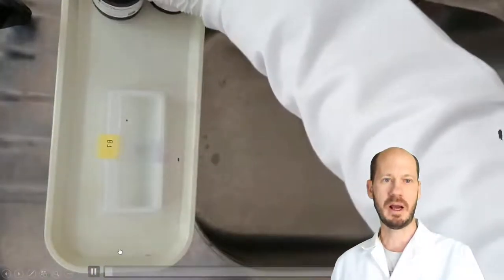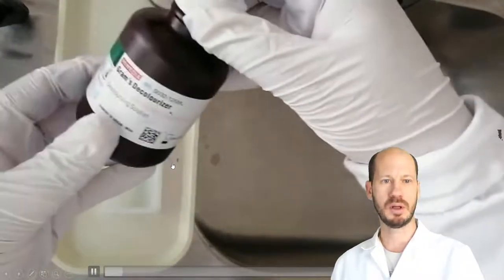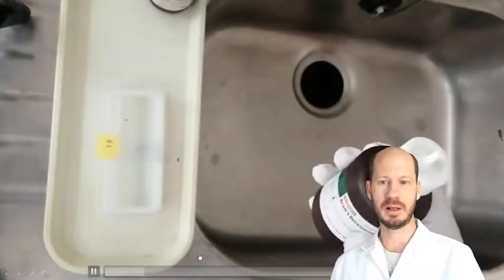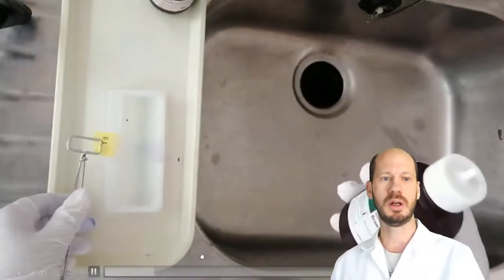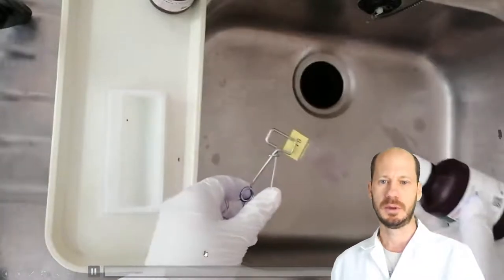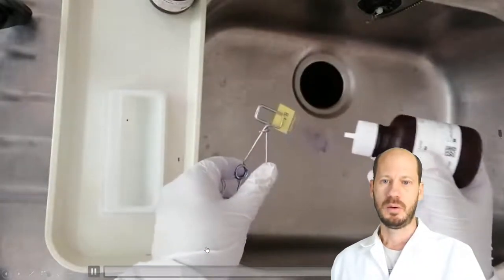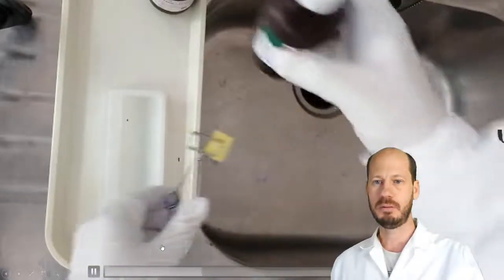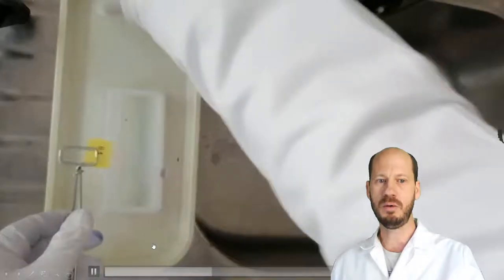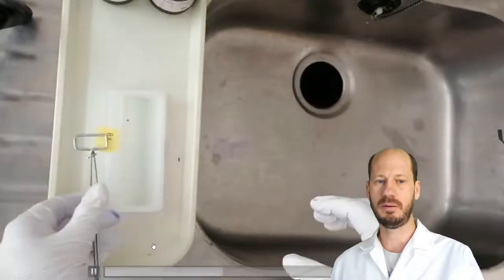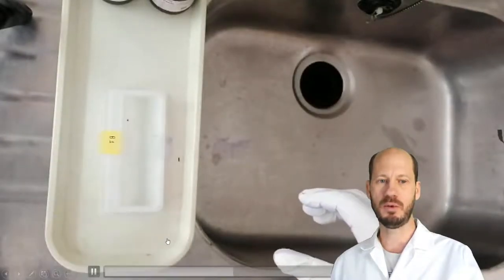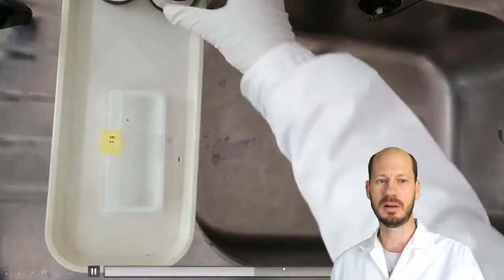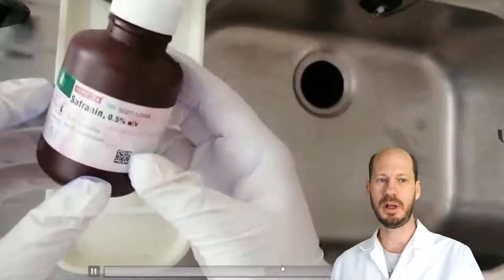Next step now is that we're going to use the decolorizer. The decolorizer is just an ethanol solution usually. As you do this, if the bacteria is gram negative, all the gram stain, the crystal violet will be removed in this step. And the cell will become transparent.